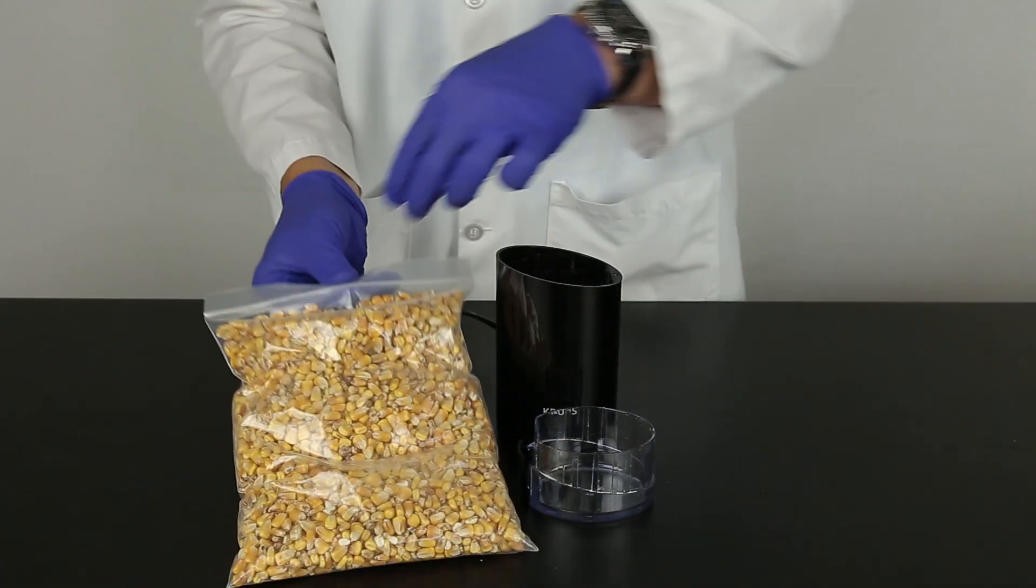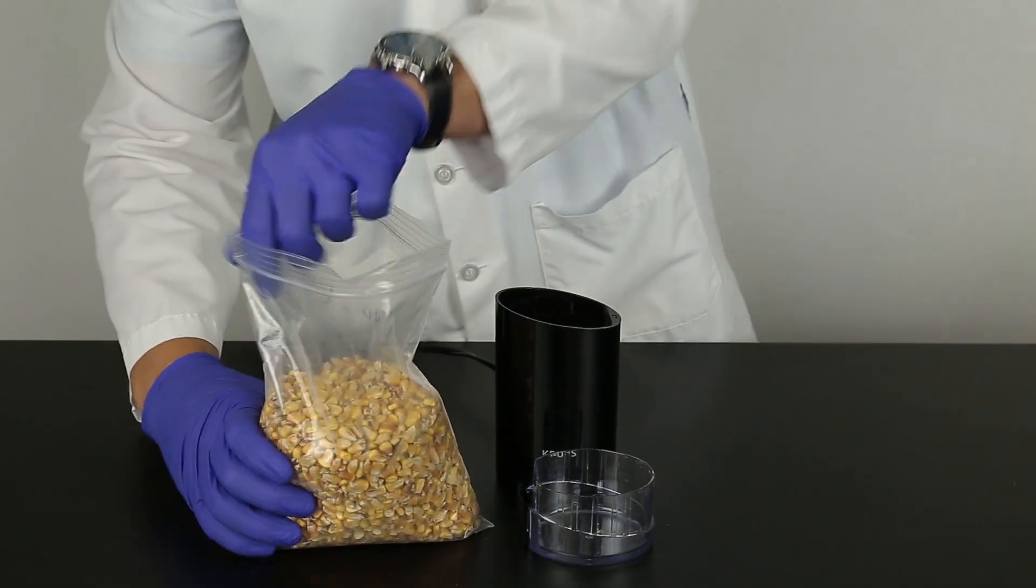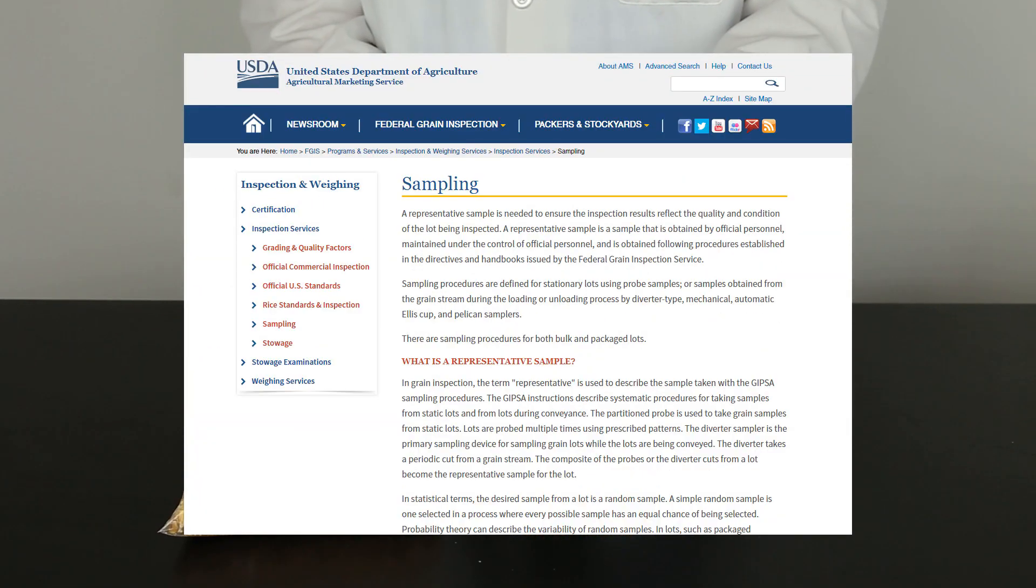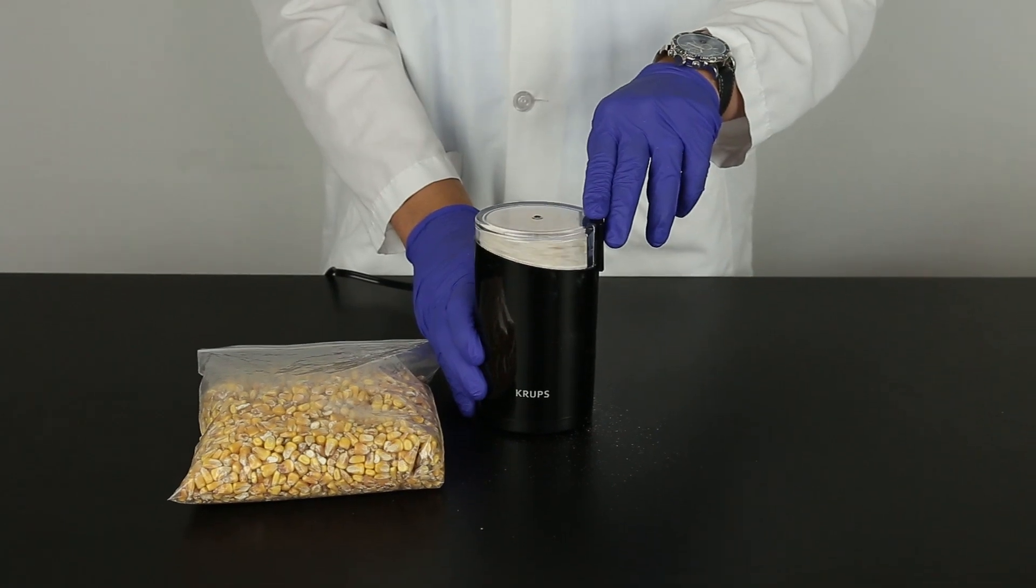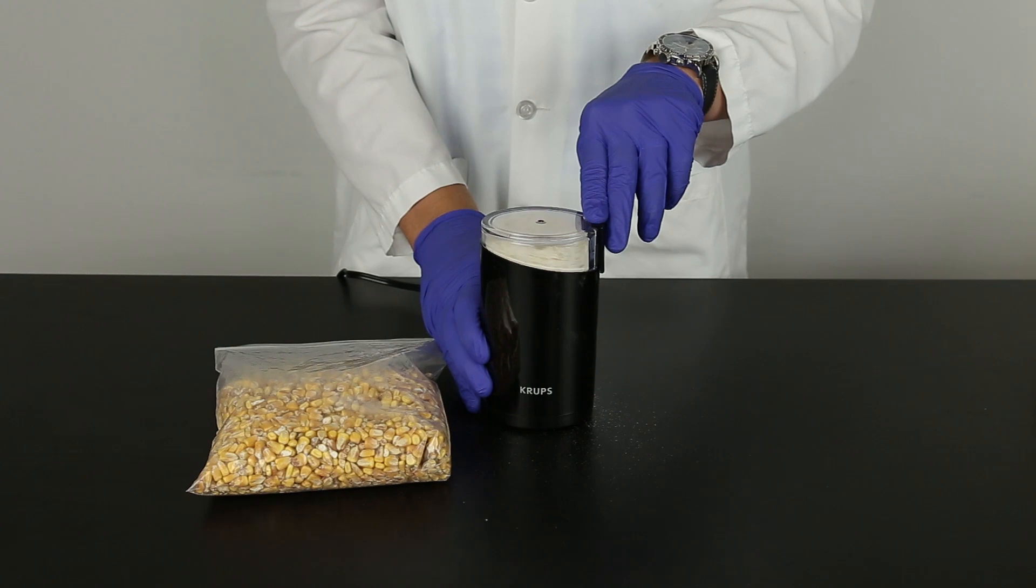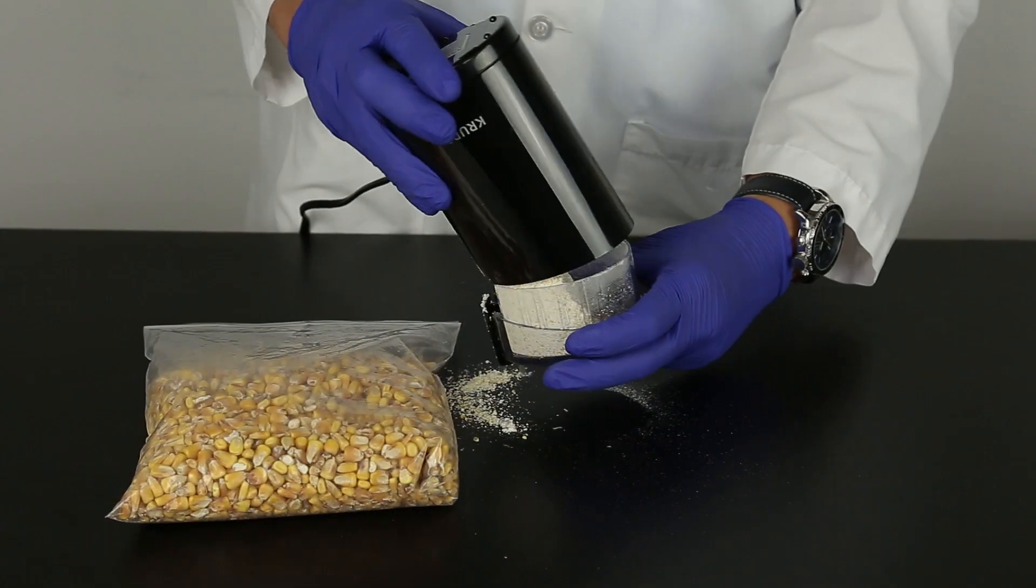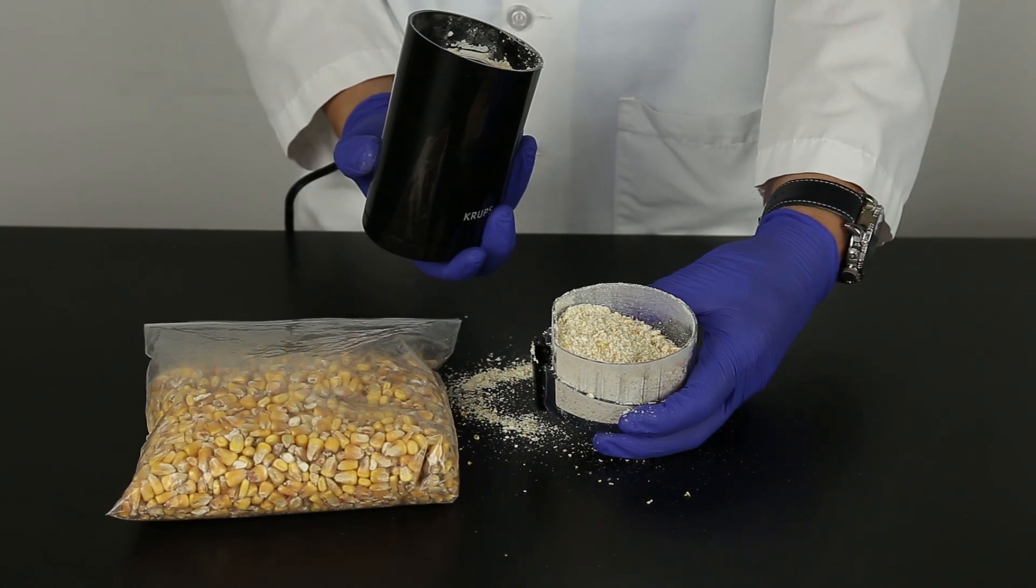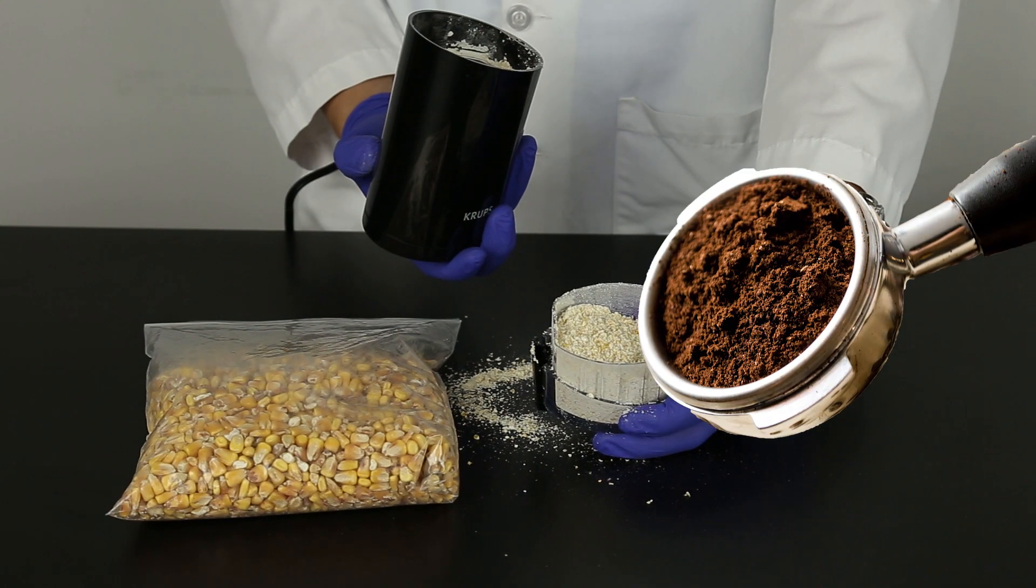The sample to be tested should be collected according to accepted sampling techniques. See the FGIS sampling protocol or contact your Neogen representative. Obtain a representative sample and grind so that at least 95 percent of the ground material passes through a 20 mesh sieve. The particle size should be about the same as espresso.